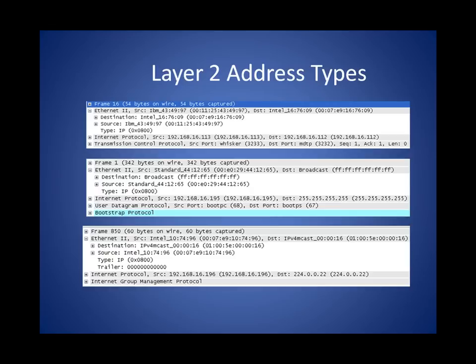Moving down, we have the broadcast frame. Again, the source MAC begins with 00, but in the destination we see all F's — six bytes, all F's. And the last one at the bottom has 00 in the source MAC beginning and then 01 in the destination, indicating that this is a multicast frame.